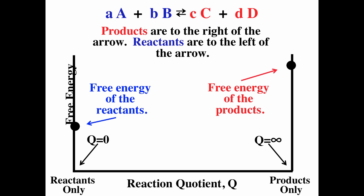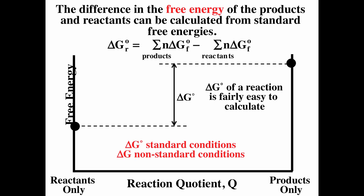When Q equals zero, we have only reactants; when Q is infinite, we have only products. ΔG° (with the superscript zero) is for standard conditions and represents the difference between products and reactants. A positive ΔG° means reactants are more stable — a non-spontaneous process. ΔG without the superscript zero refers to non-standard conditions.